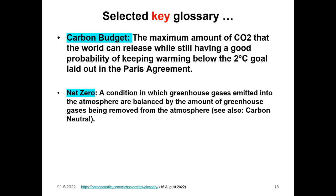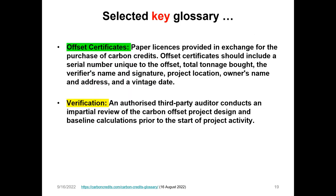There is also the concept of a carbon budget, which is the maximum amount of CO2 that the world can release while still having a good probability of keeping warming below 2 degrees Celsius — a goal laid out in the Paris Agreement. Net zero is a growing buzzword describing a condition in which greenhouse gases emitted into the atmosphere are balanced by the amount being removed — also referred to as carbon neutrality. Offset certificates are paper licenses provided in exchange for the purchase of carbon credits, and should include a serial number, total tonnage bought, the verifier's name and signature, project location, owner's name, and vintage date.